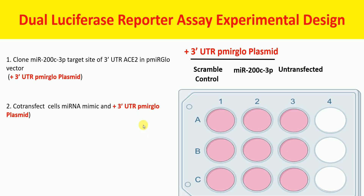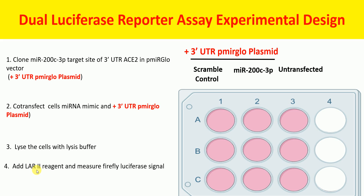After transfection of the cells with the mentioned molecules, after a certain amount of time — it can be 24 hours or 48 hours depending on your experimental needs — we do the lysis of the cells with lysis buffer. After the lysis, we add LAR2 reagent and measure the Firefly luciferase signal. Finally, we add Stop & Glo reagent and measure the Renilla luciferase signal.